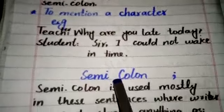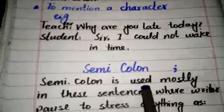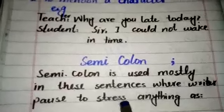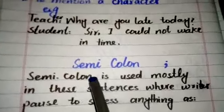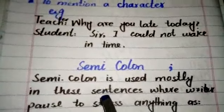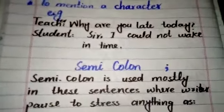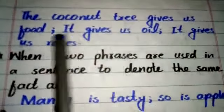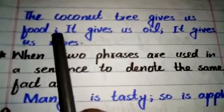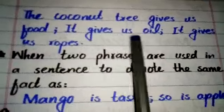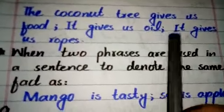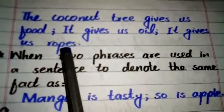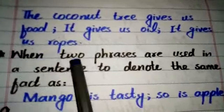Now we will discuss the semicolon. The semicolon is mostly used in sentences where the writer pauses to stress something. For example: 'The coconut tree gives us food; it gives us oil; it gives us ropes.'